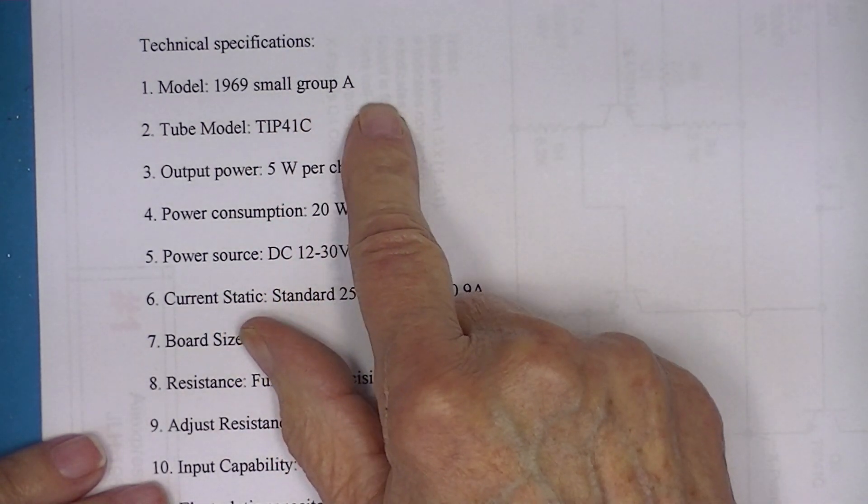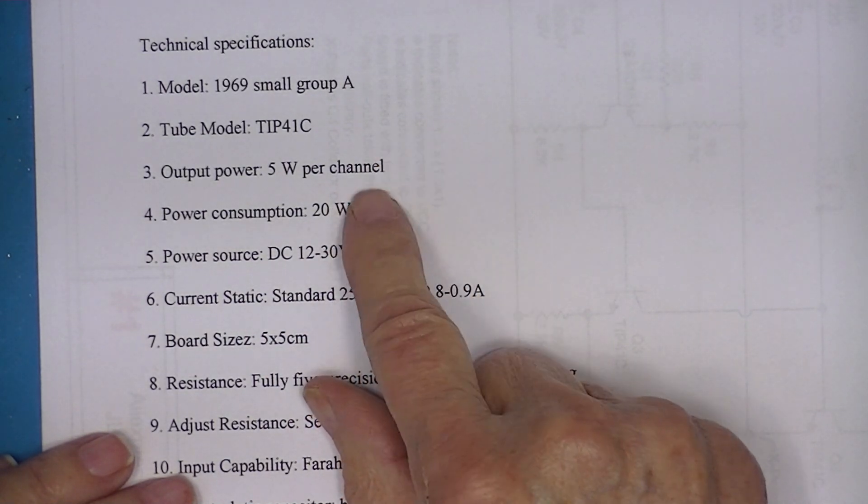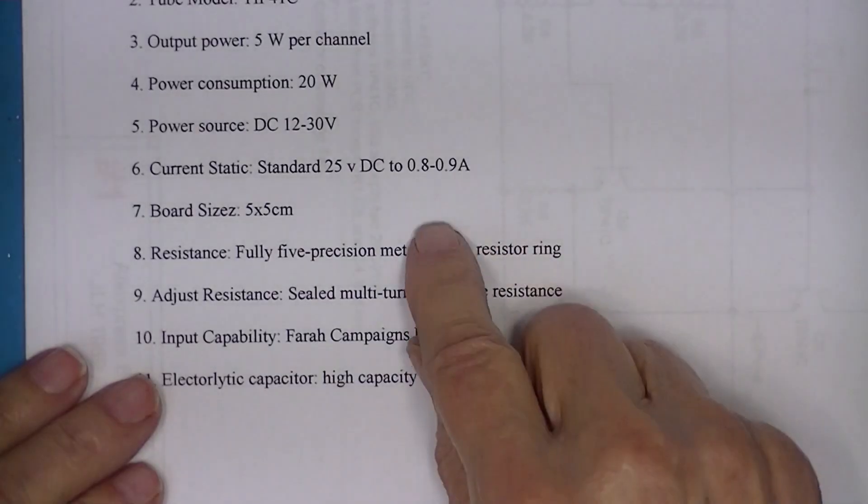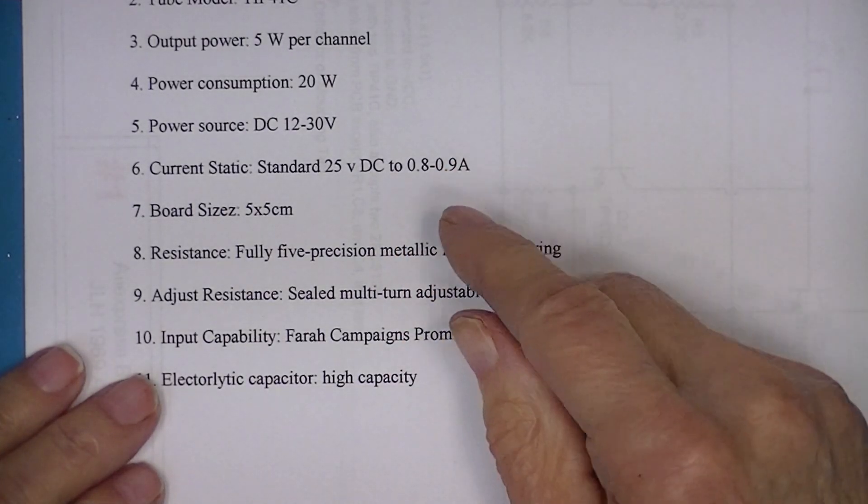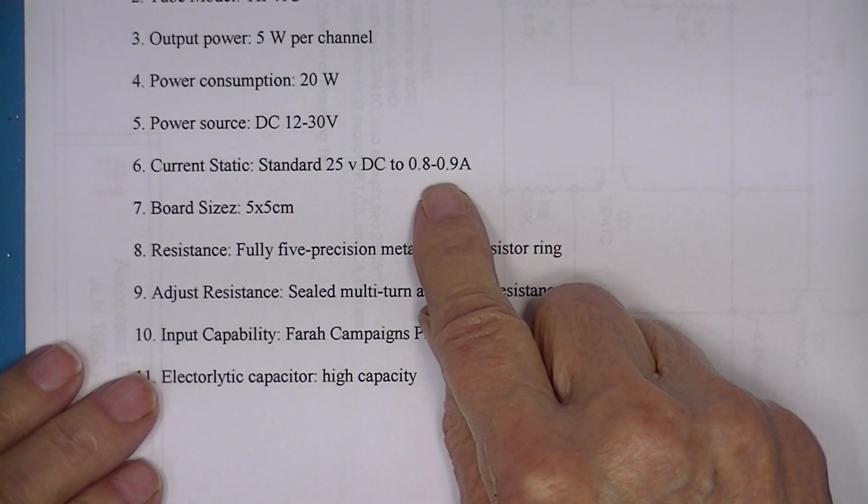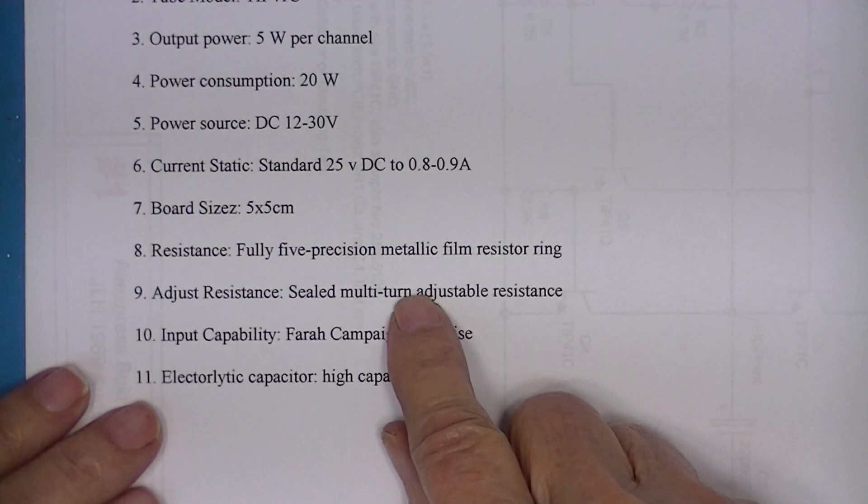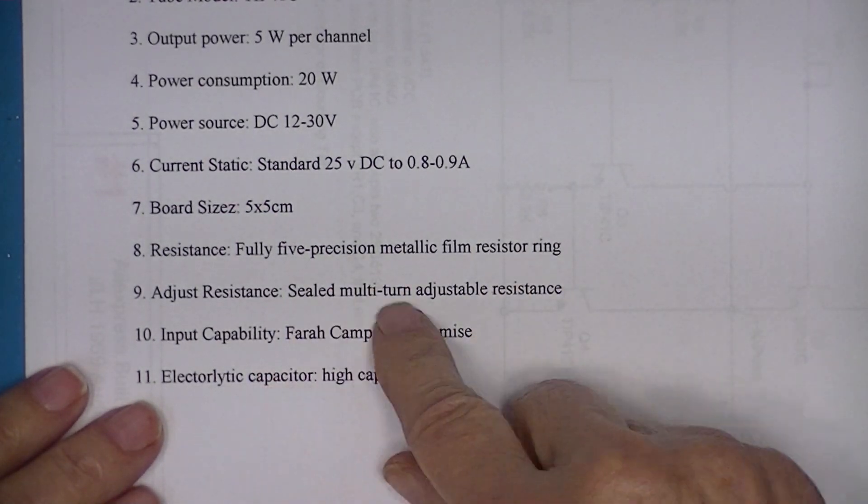I don't know what a small group A is. They're assuming I can get five watts out of the amplifier. They seem to recommend a static current. It's a class A amplifier so it'll be a constant current somewhere around 0.85. Everything else is just run-of-the-mill.